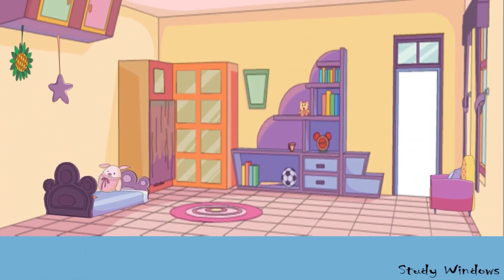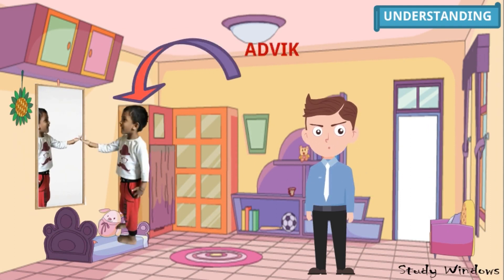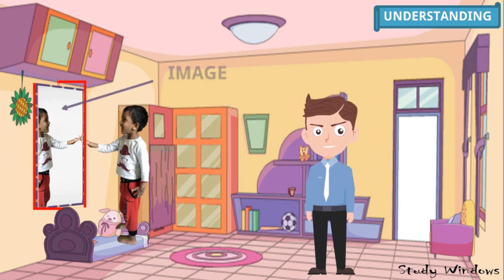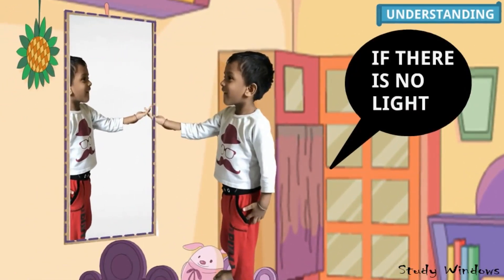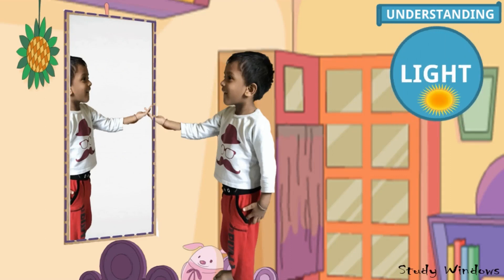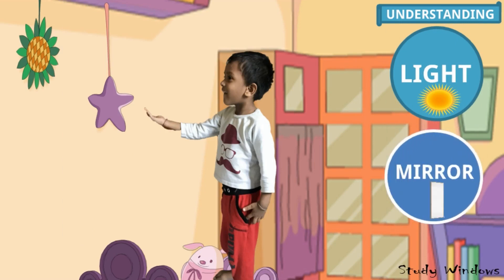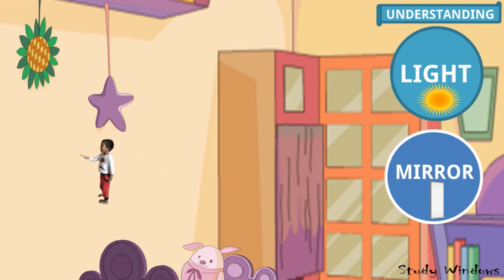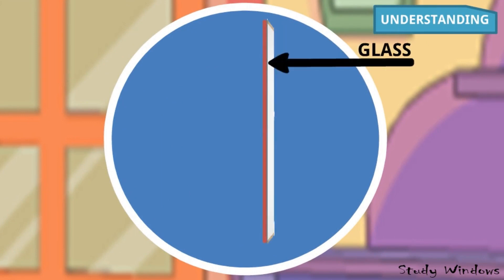In our house, bring one mirror. My friend Advik is standing in front of the mirror, and this is the image of Advik. If there is no light, we cannot see anything — it will be totally dark. If light comes, then we can see. So light is one of the main factors for reflection. Also, the mirror is needed — no mirror means no image. And the object should be opaque; human beings are opaque objects.